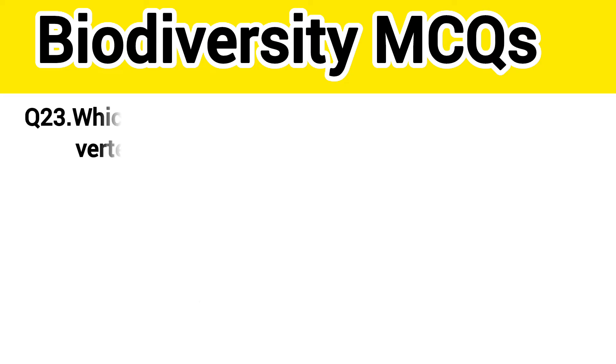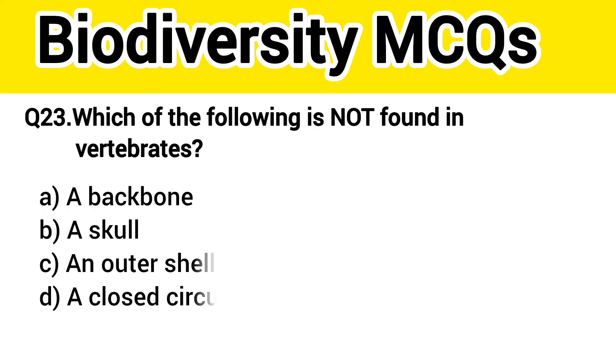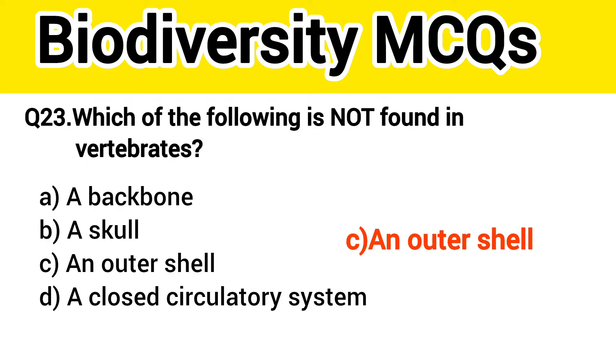Question number 24. Which of the following is not found in vertebrates? The right answer, option C: An outer shell.